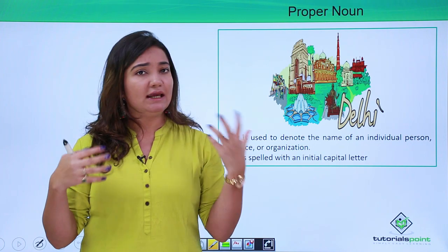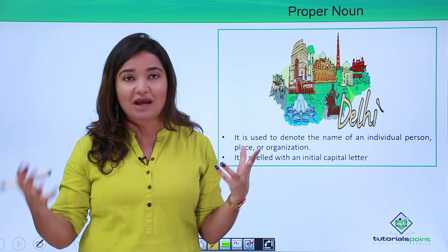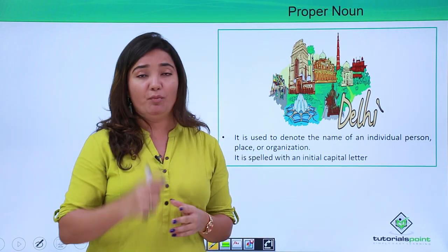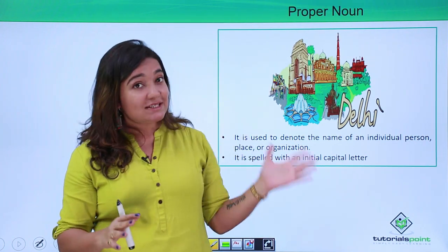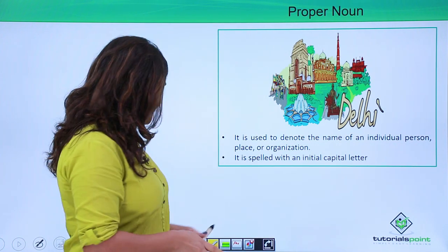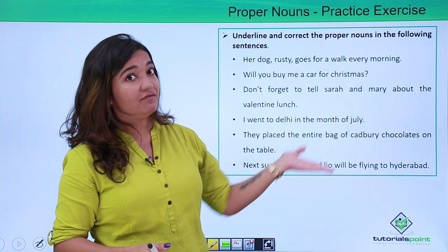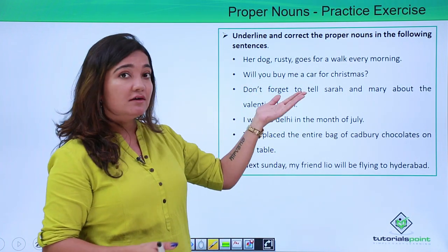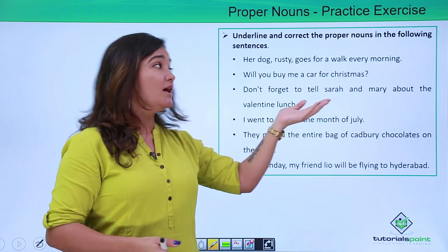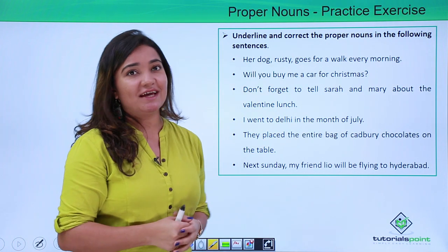Names of persons, places, things, brands — very specific ones — are nothing but proper nouns. Now that you are aware, let's go ahead and practice some questions. You have different sentences and you have to recognize which amongst them is a proper noun, and if something is wrong, just correct it.